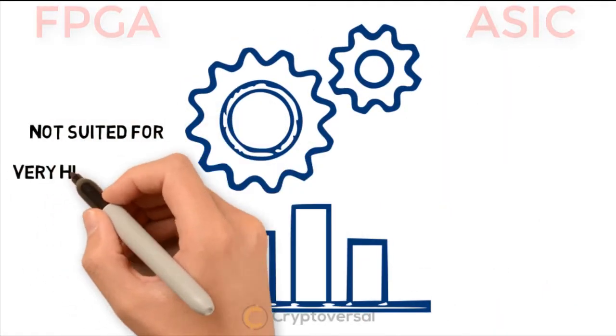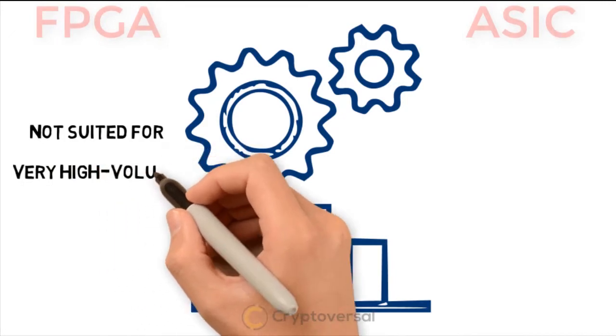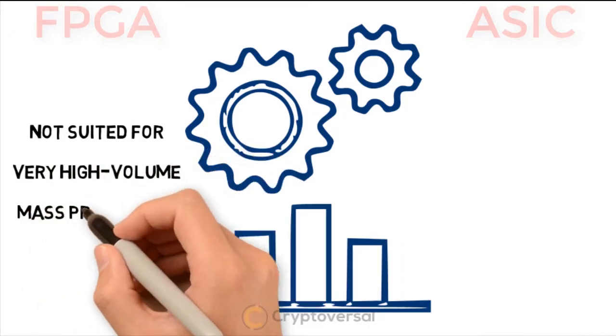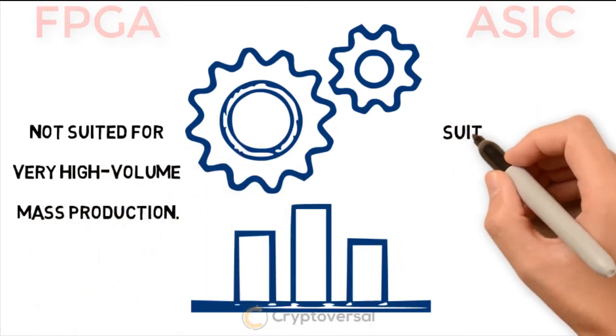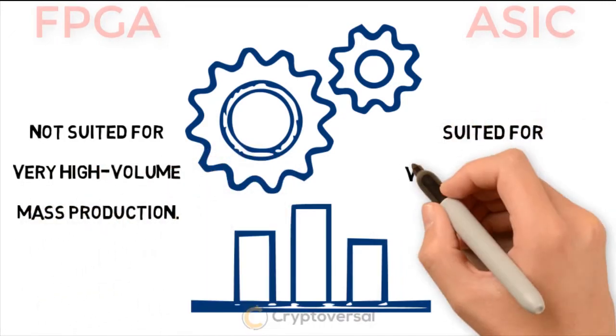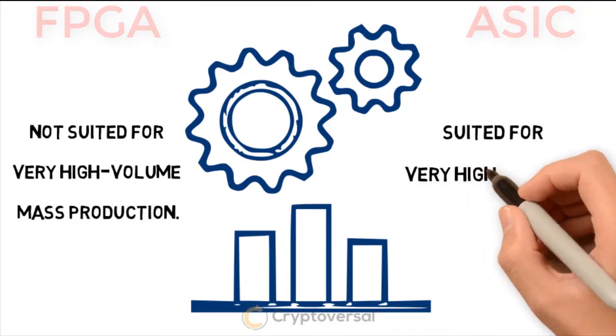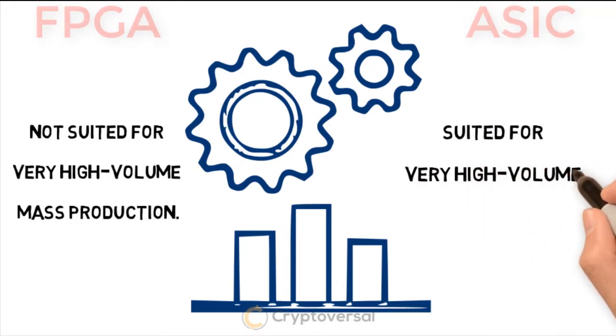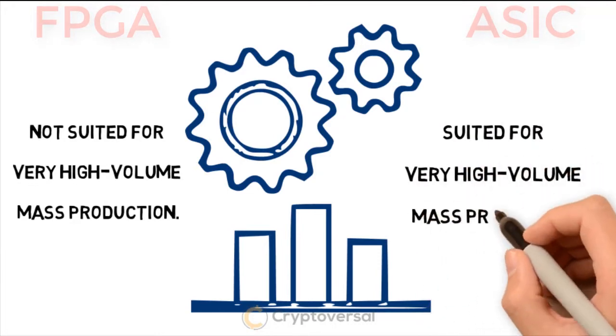FPGA is not suited for very high-volume mass production, while ASIC is suited for very high-volume mass production.